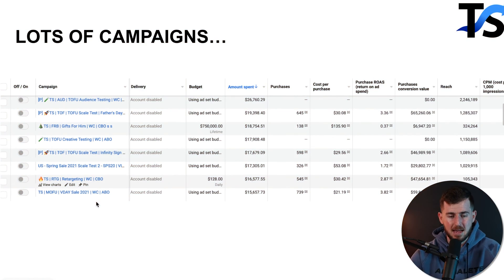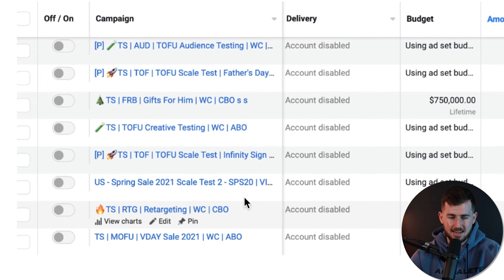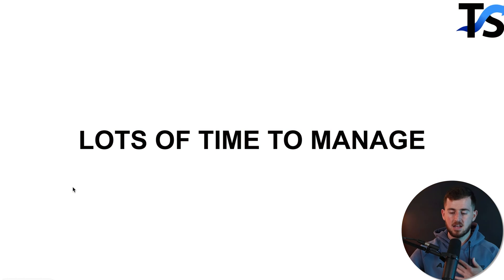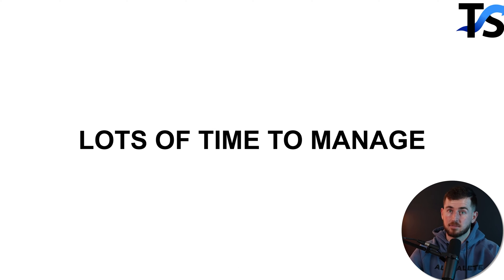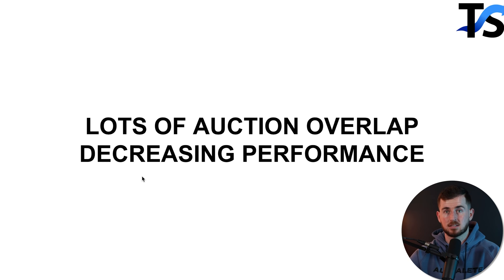First I want to cover the old way — what a lot of people are still doing. This is an old campaign from one of my old accounts back in 2020. You can see we have audience testing, scale test, gifts for him, different angles, creative testing, TOFU, spring sale — all kinds of different campaigns running at once. This was very time-intensive. Facebook should be very simple in terms of time spent managing campaigns. Most of your time should go into creative production. Having a lot of campaigns also causes auction overlap, which decreases the performance potential of your accounts.